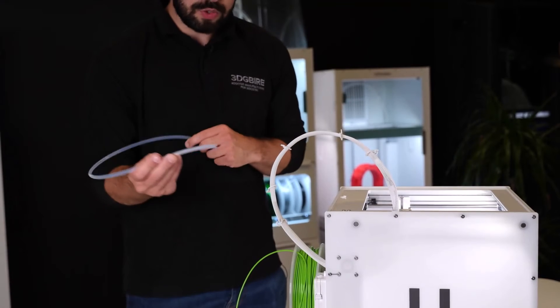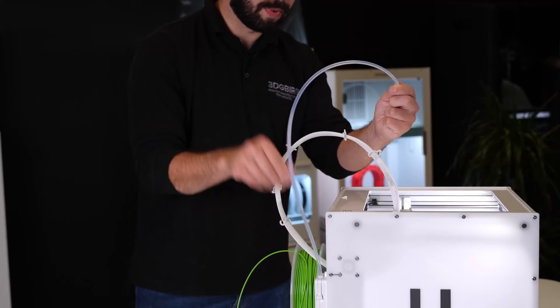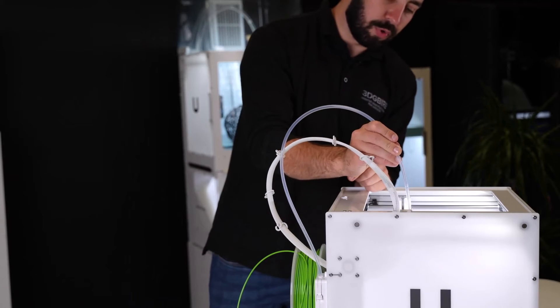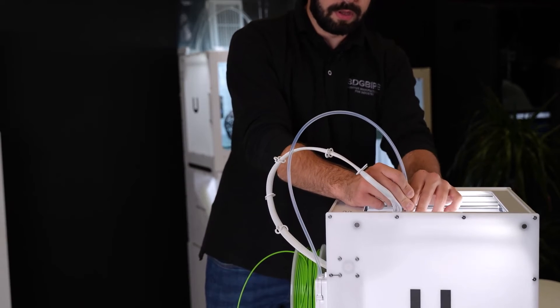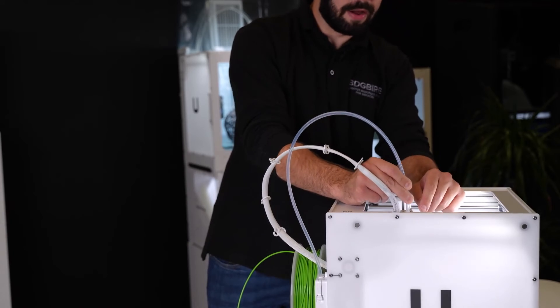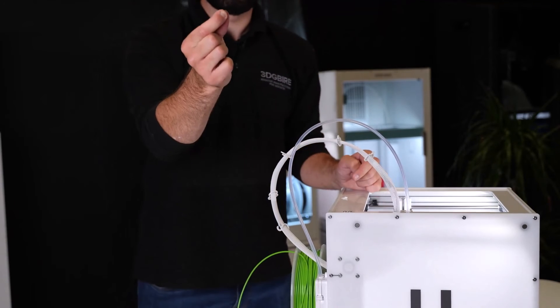Now we'll reinsert this end—push from the top here, and the second one push in from the top of the print head. Make sure it goes in all the way and that we can't pull it back out. Once we're happy, we'll put these little clamp clips on.